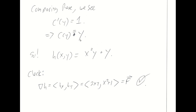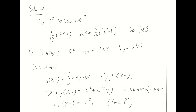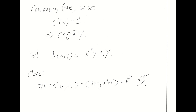Now I have c(y) as y, and I can revisit my original expression for h that involved c(y) and insert the value I found. We knew that h was x-squared-y plus c(y). Now I know that to be x-squared-y plus y. And that's a potential function. We can check it: taking the gradient of h — the partial with respect to x gives 2xy, and the partial with respect to y gives x-squared plus 1. That is the vector field we originally began with, so we have successfully found a potential function for big F hat.